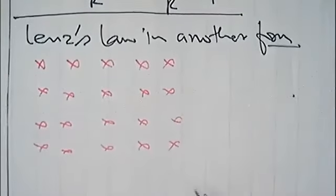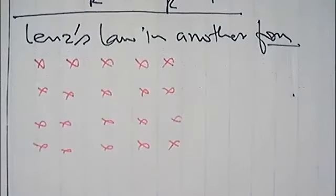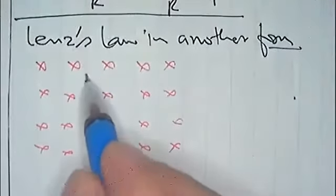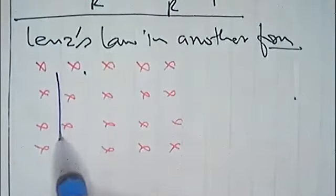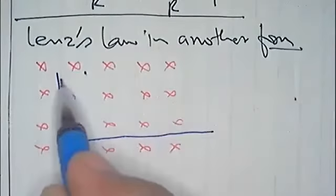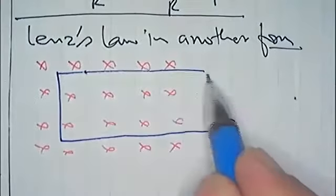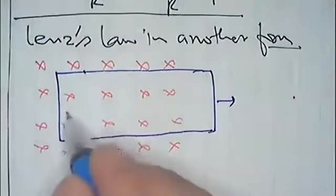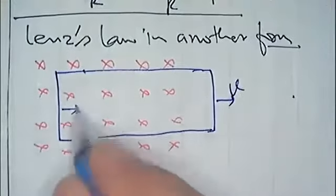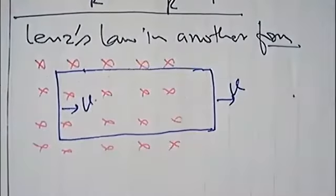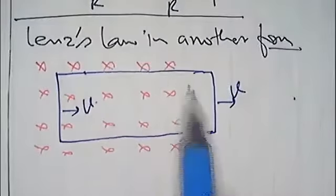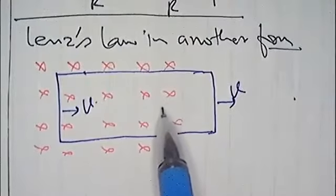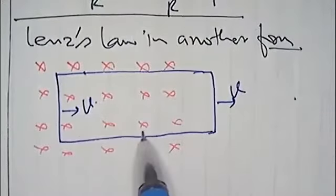And I am going to ask you something, so get prepared. This is a loop, a rectangular loop. This rectangular loop is coming out of magnetic field with velocity v or with any velocity. You are asked the direction of induced current in this loop. What is the direction of current in this?